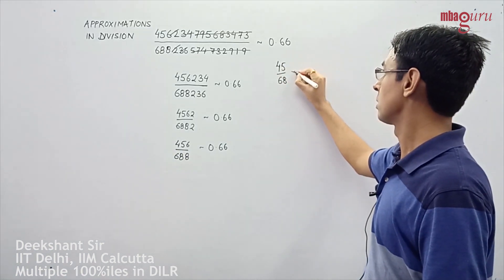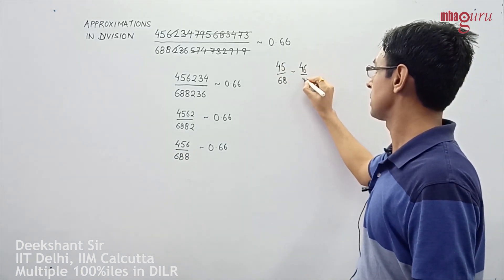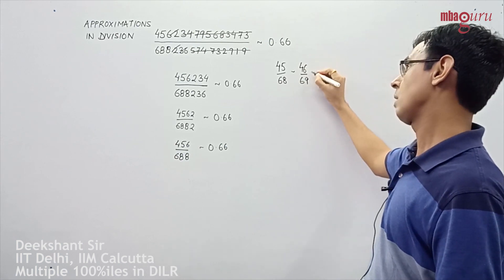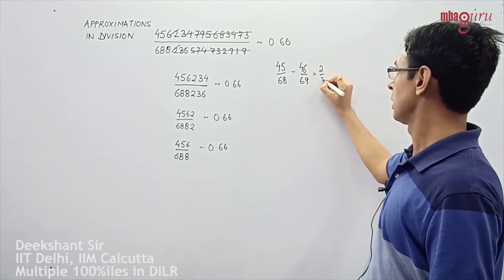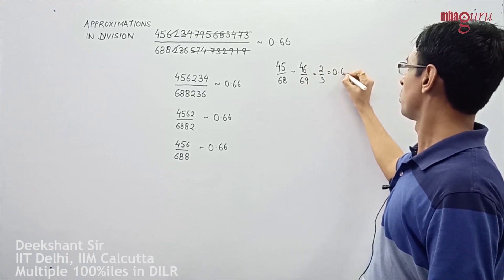Which I saw as very close to 46 by 69, which is nothing but 23 times 2 divided by 23 times 3, which is 2 by 3, and hence 0.66.